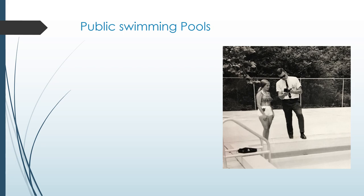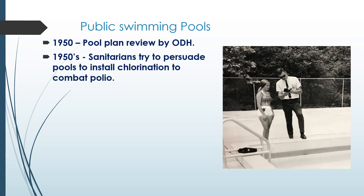The last program to discuss is public swimming pools, which were largely unregulated at the beginning of the century. In 1950, pool operators were first required to submit plans to the Ohio Department of Health for approval. In the early 1950s, sanitarians tried to persuade pools to install chlorination to combat polio.